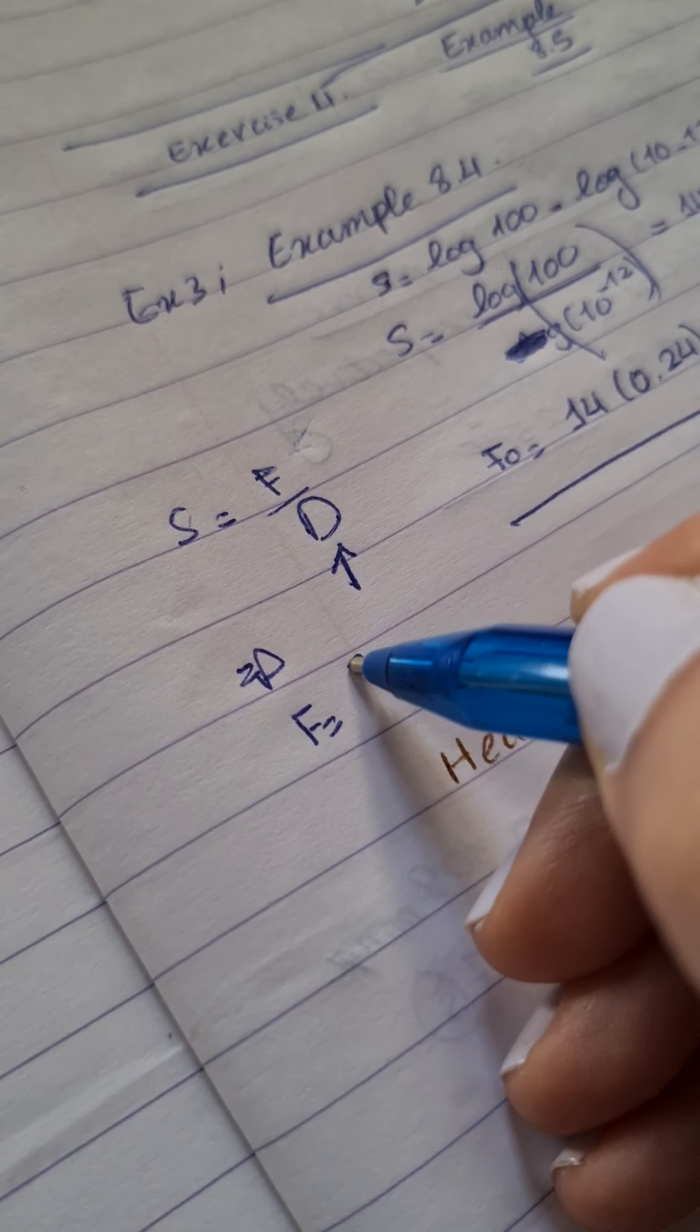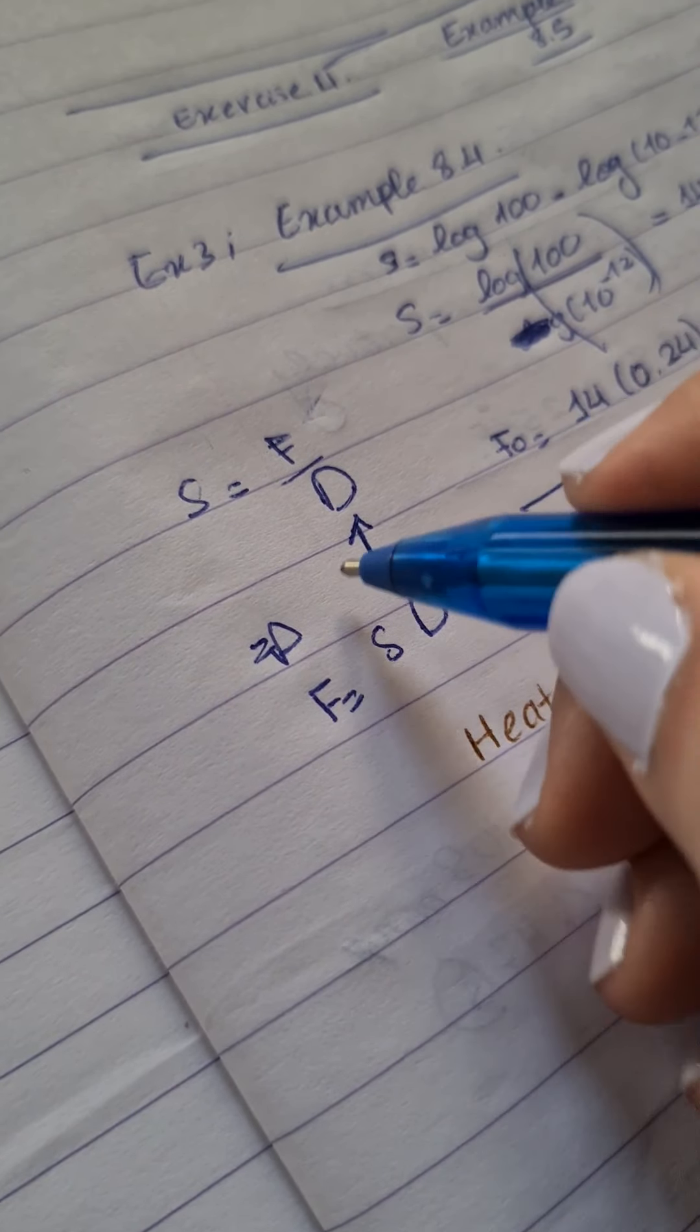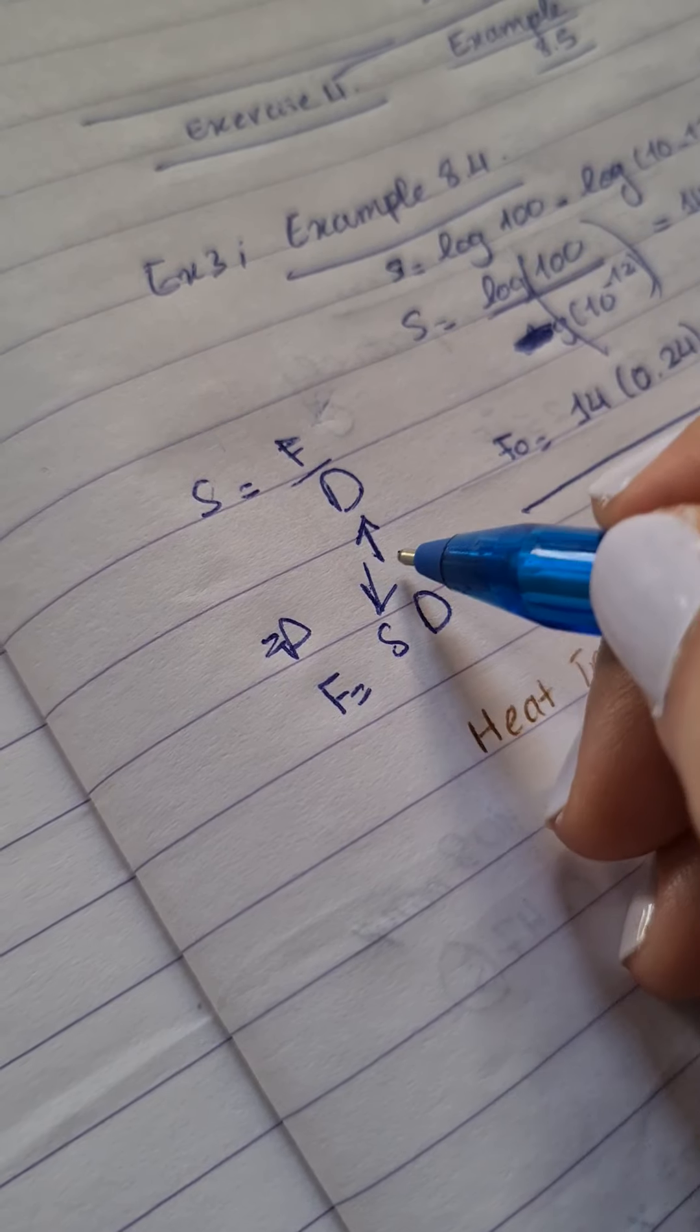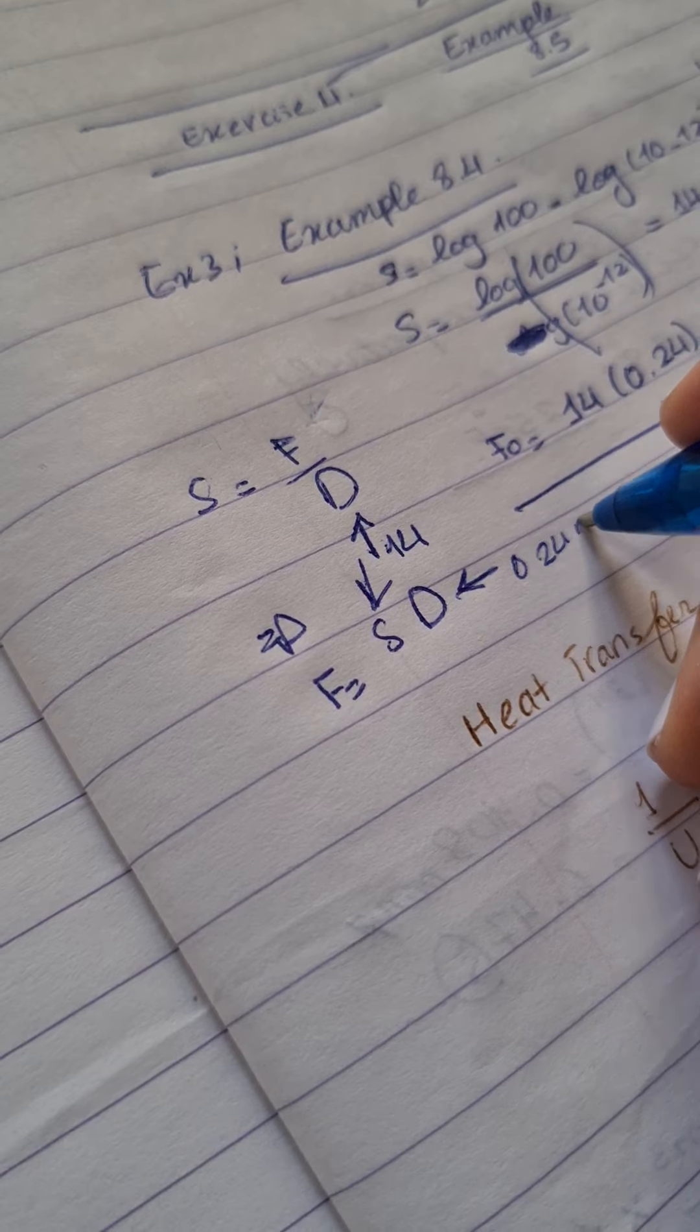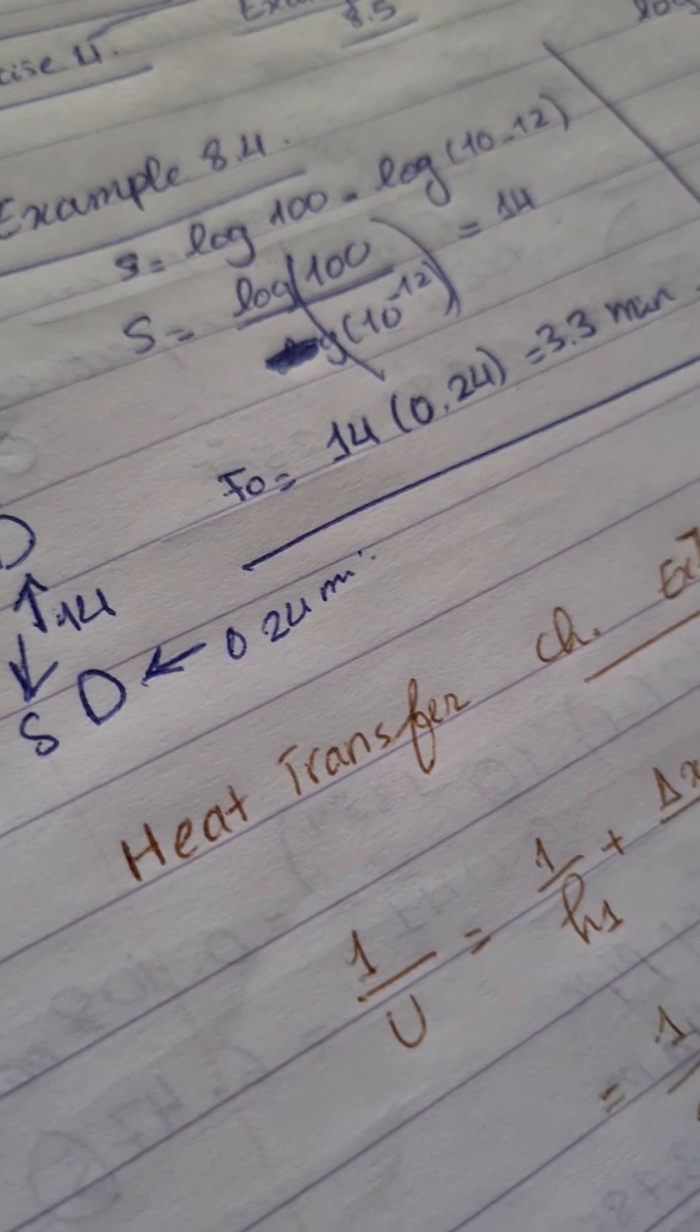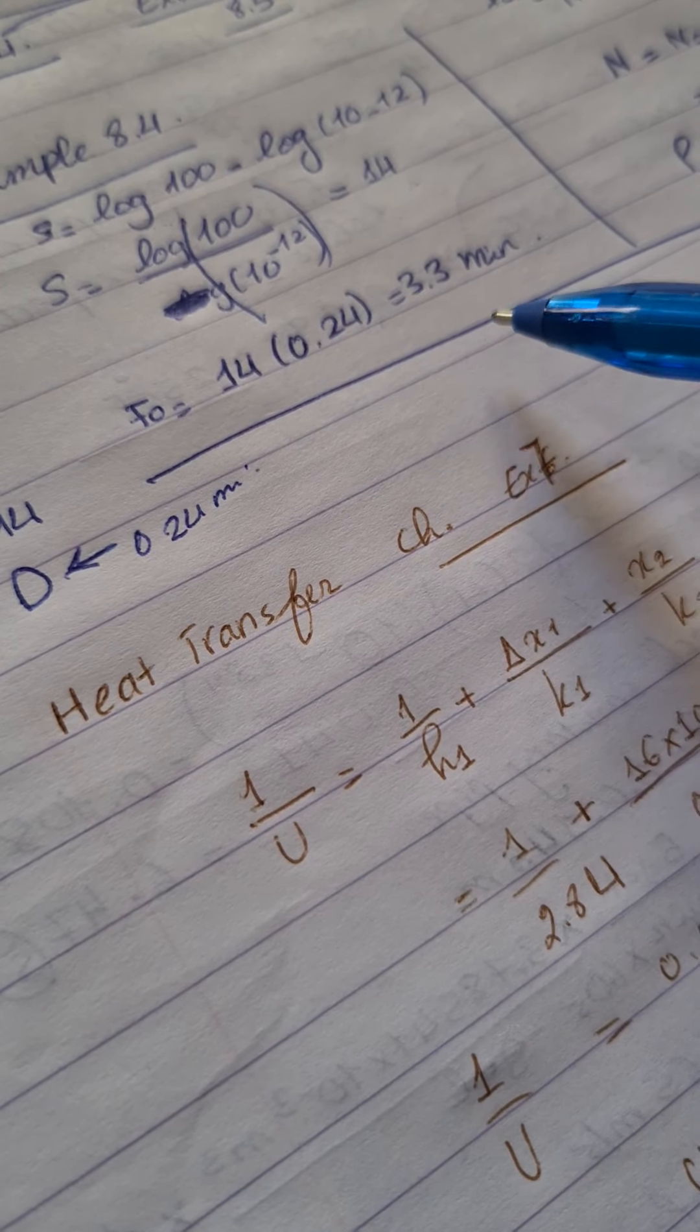So if I want to get F, it would be equal to S times D. As I have calculated before, which is 14. And D is given, which is 0.24 minutes. So the final answer would be 3.3 minutes.